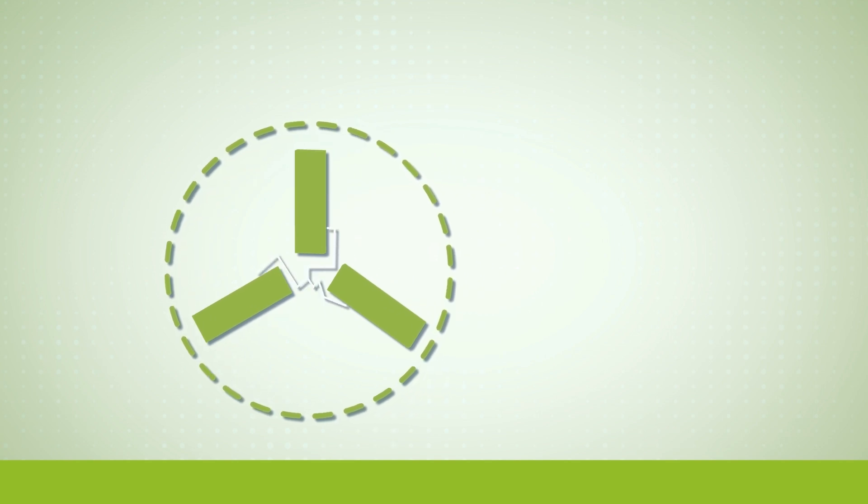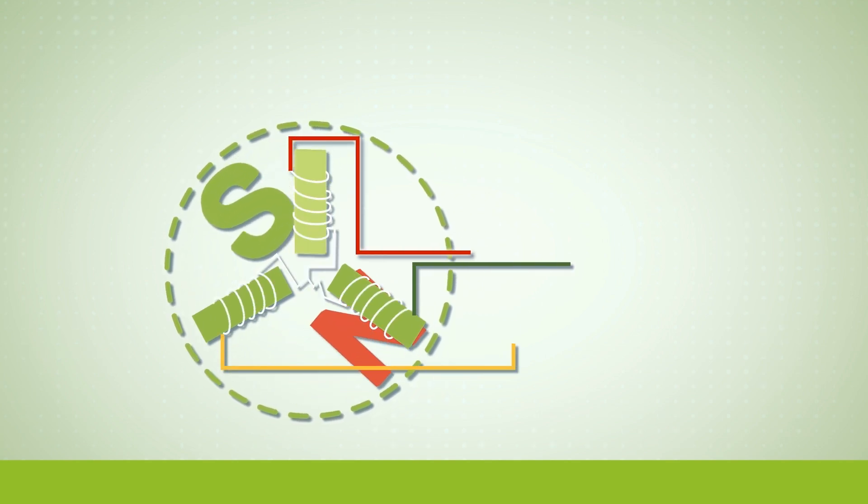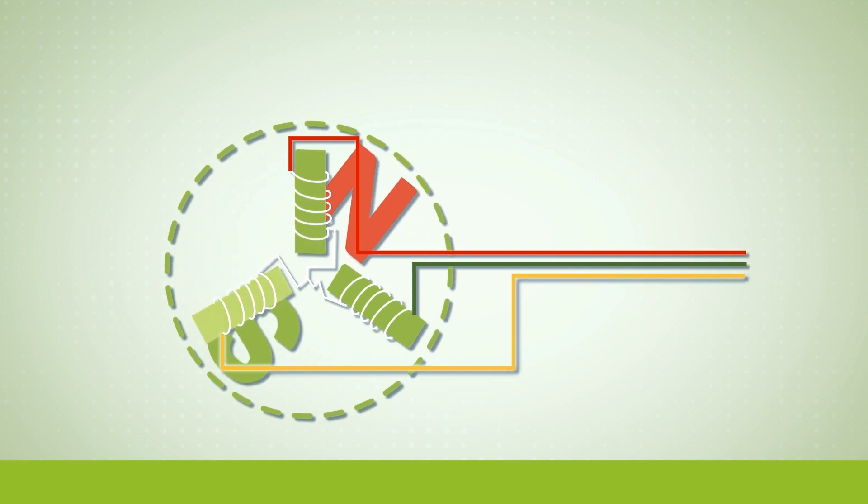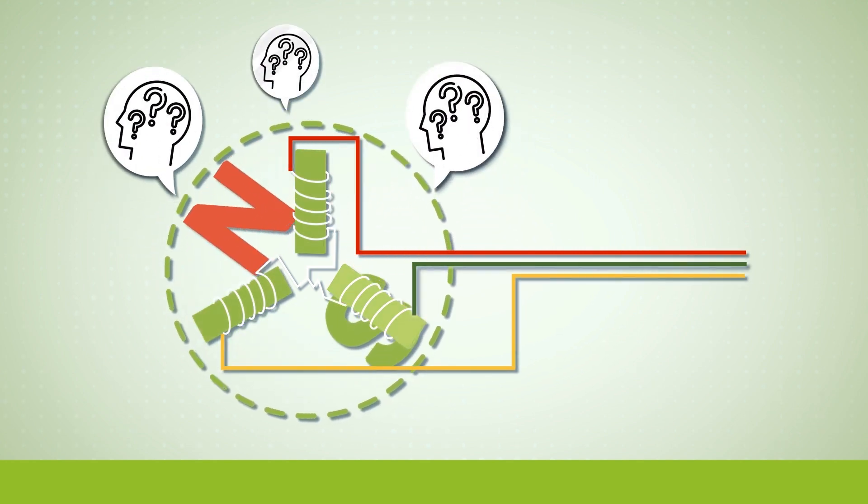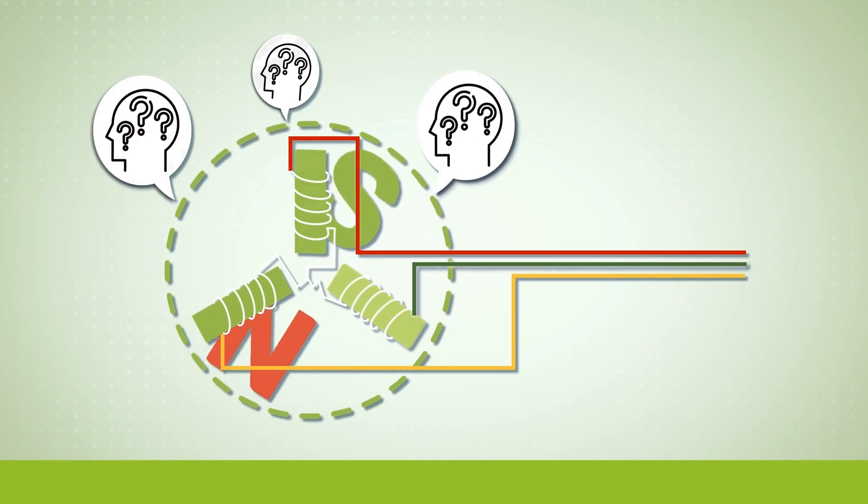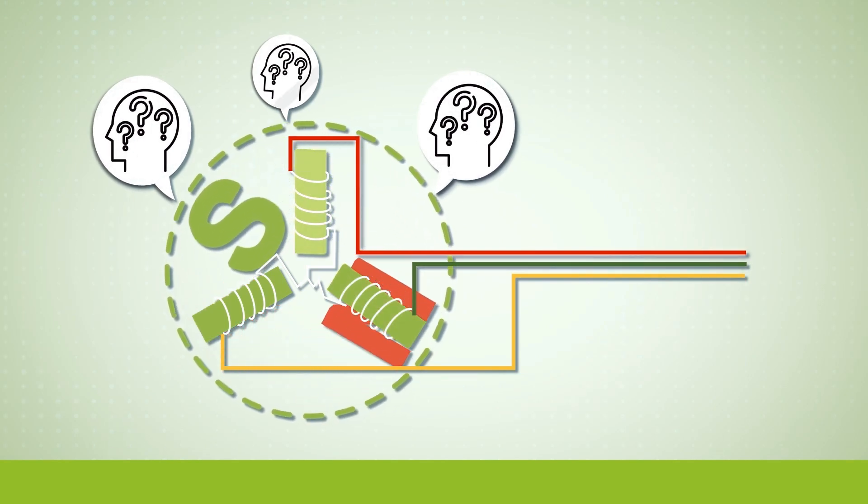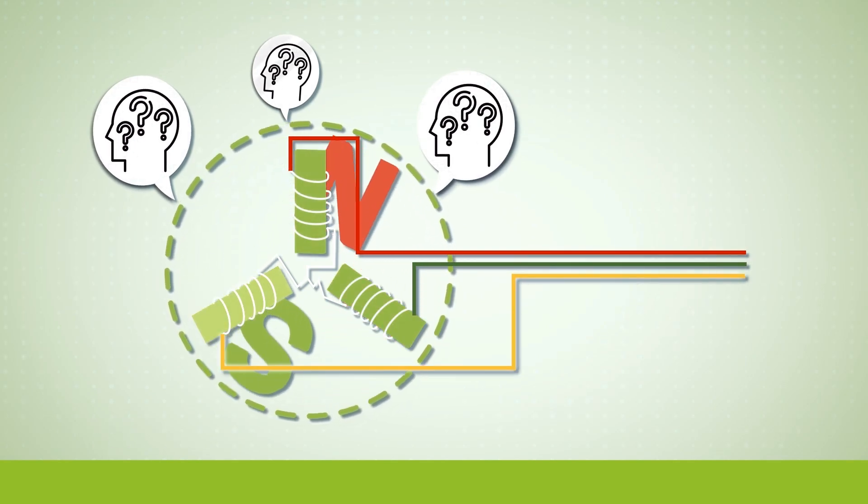It's important to understand how alternating current works to be able to appreciate the fact that three-phase power is actually three lines that are 120 degrees apart. This concept confuses a lot of people, so to have that last sentence make sense, let's start with how current moves in single-phase power.